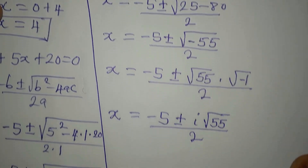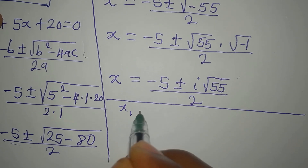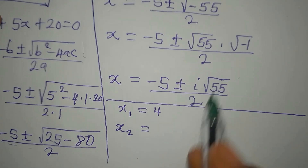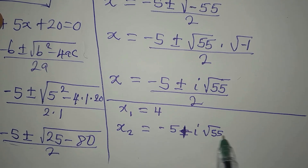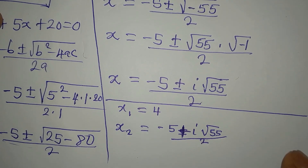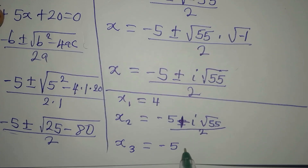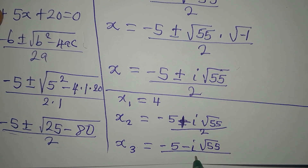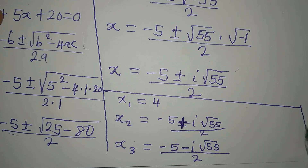This is a two-in-one solution. So the three solutions are: x₁ = 4, x₂ = (-5 + i√55) / 2, and x₃ = (-5 - i√55) / 2. These are the three solutions to the equation. Thank you for watching.